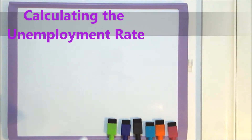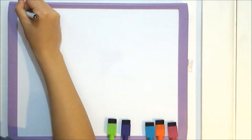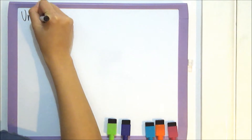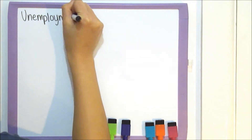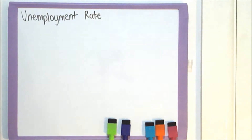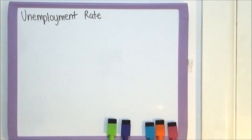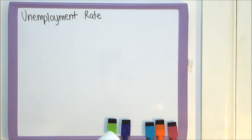Hey guys, it's WhySoCorny here and today I'm going to explain how to calculate the unemployment rate, specifically the unemployment rate of Australia. The workforce in Australia is defined as those people aged 15 years or over engaged in full-time or part-time employment, along with those unemployed people who are actively seeking work.